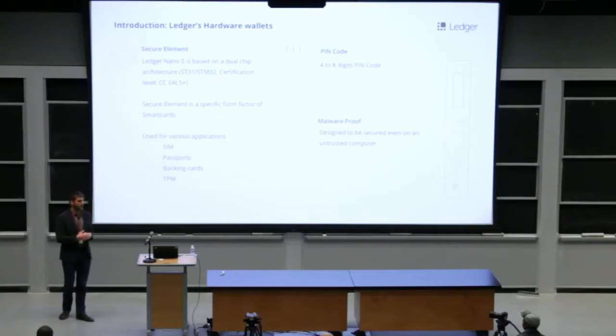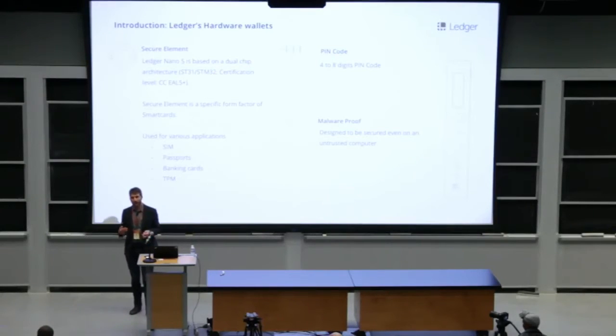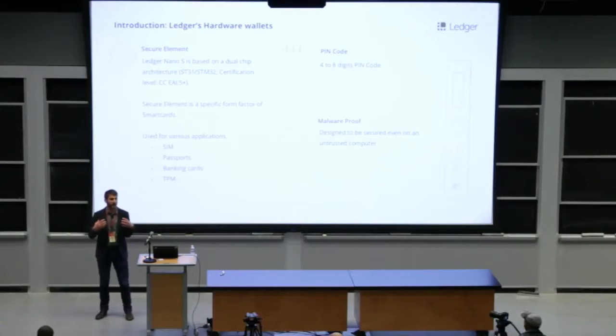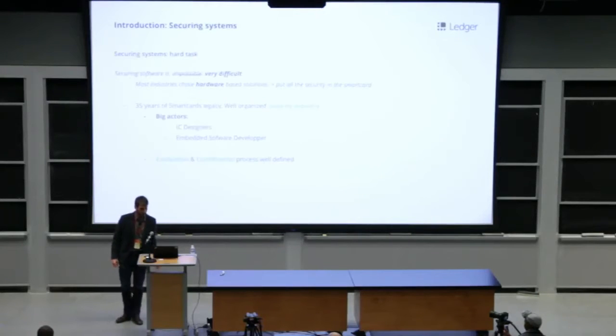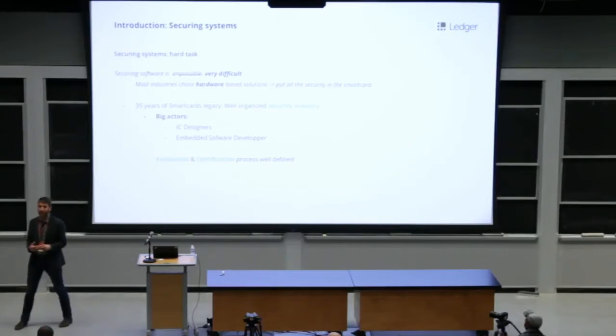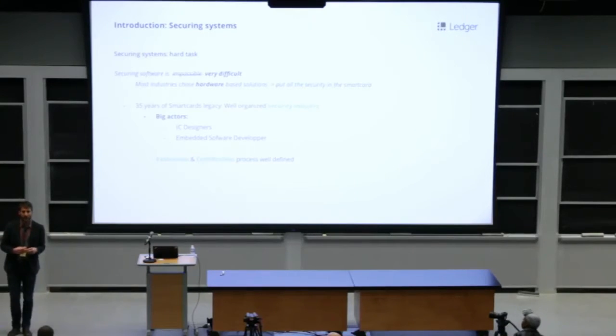Of course, we have a pin verification to log in the wallet. And our threat model is we can run our device in an untrusted environment. In Europe and in France, specifically in France, industries have developed the smart card technology. And this is a key technology for securing systems. Securing systems is a hard task. And securing software is even harder. That's why most industries have chosen hardware-based solution to secure their systems. And the idea is to put all the security of the system in a single point, the smart card.